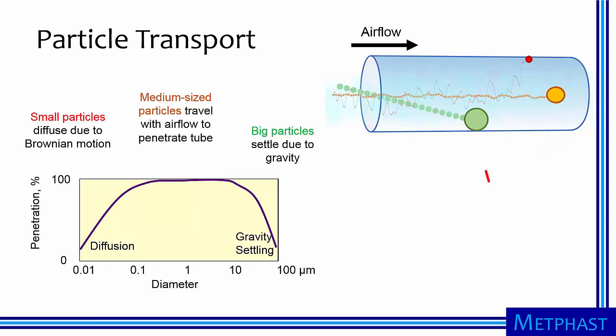Big particles, the green particle shown in the figure, settle due to gravity and tend to collect on the bottom of the walls of the tube and have low penetration, which again favors short tubes.